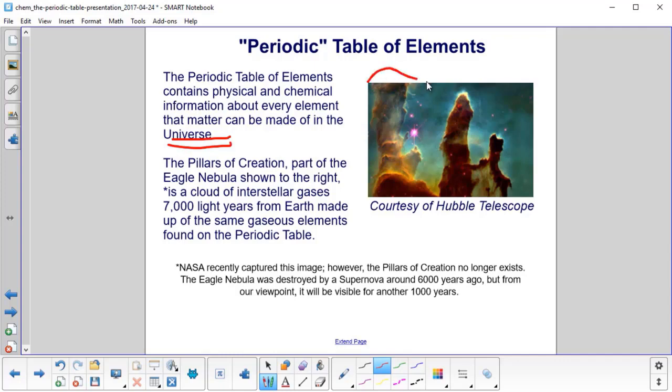This beautiful picture here is part of the Eagle Nebula, and it's called the Pillars of Creation. You can kind of see how we've got these straight lines going up looking like pillars. It's a cloud of interstellar gases, 7,000 light years from Earth, which is pretty far away, and it's made up mostly of hydrogen, just like we have in our sun, just like we have here on Earth.